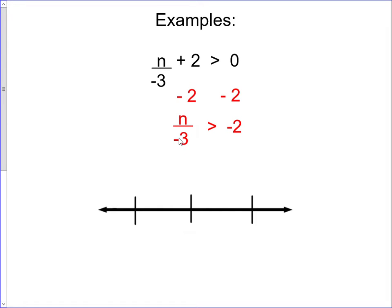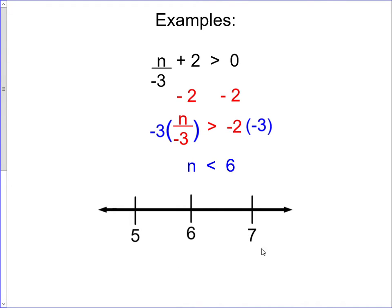Now we need to undo the division by negative 3, so we multiply both sides by negative 3. Since we're multiplying by a negative, we must change the direction of the inequality sign. On the side with the variable the negative 3s cancel out; on the other side, negative 2 times negative 3 is positive 6. So we get n is less than positive 6. On the number line we use 5, 6, and 7. Since it's not 'or equal to,' we use an open circle on 6 and shade in the less-than direction. We can verify by plugging in 5: is 5 less than 6? Yes — we graphed it correctly.